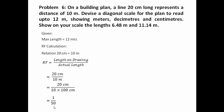So the RF works out to 1 over 50. This is basically what you call a reducing scale — something in reality that was 10 meters has been compressed or shrunk by 50 times so that it can fit properly on a drawing sheet, represented by a line 20 centimeters long.